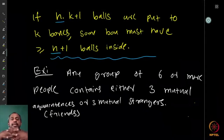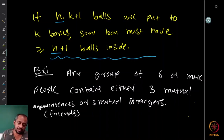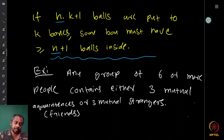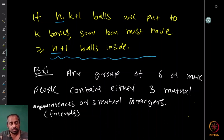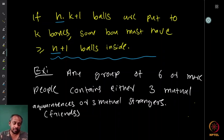The same pigeonhole principle can be written in a more usable form: suppose we have n times k plus one balls put into k boxes. Then one of the boxes must have greater than or equal to n plus one balls inside. The proof is the same: if each box had at most n balls, there would be at most n times k balls total, but we have more.